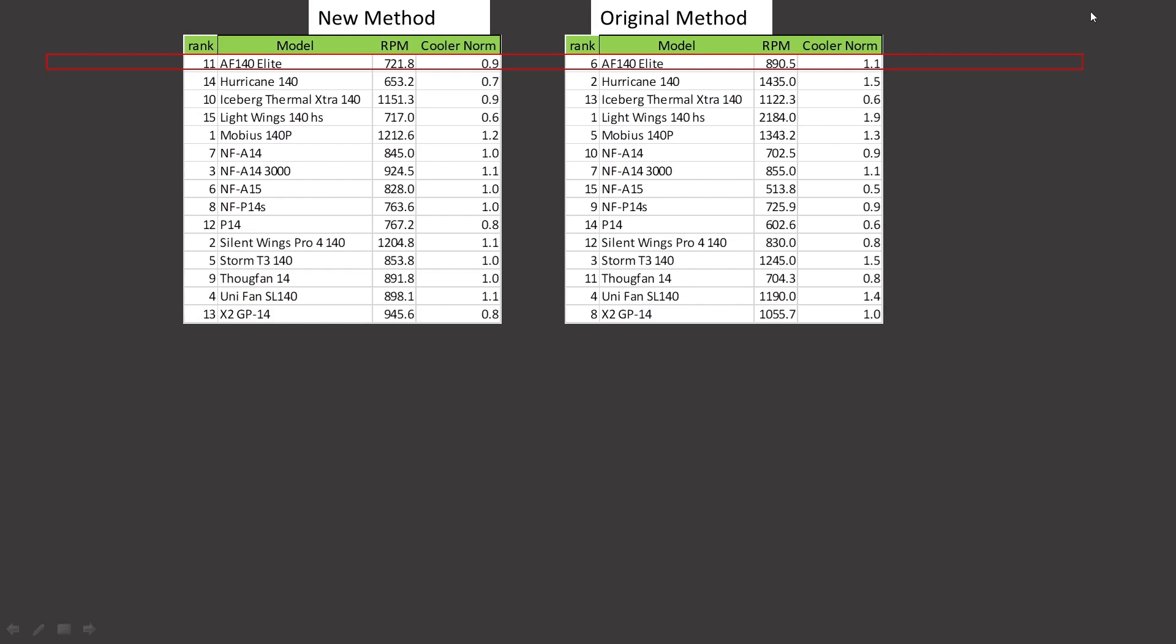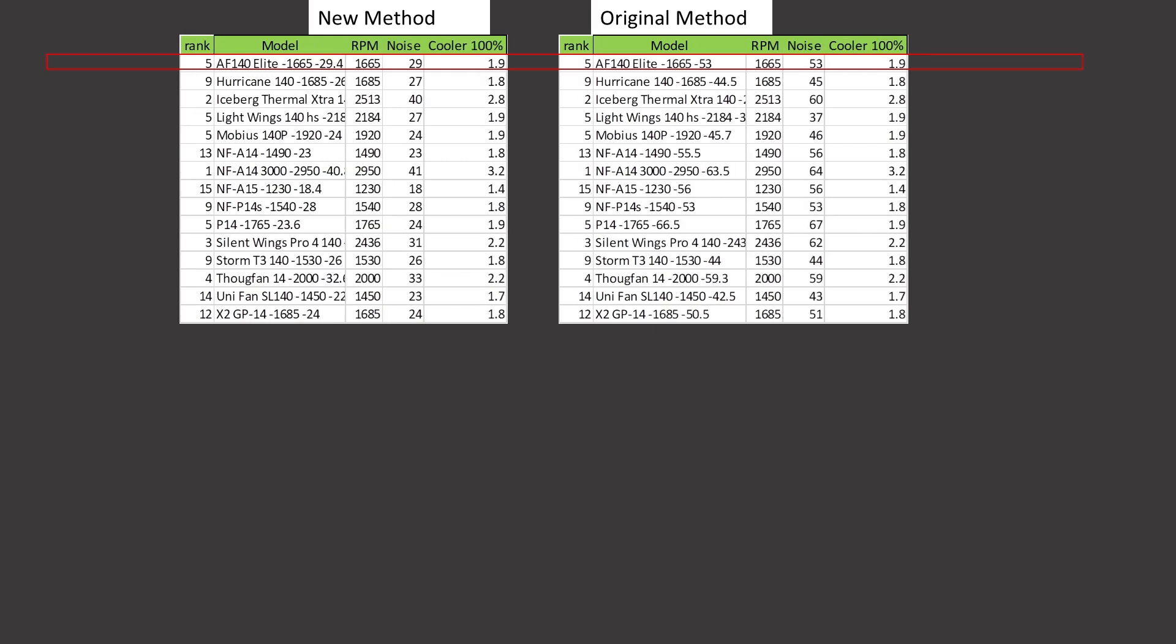Let's get into what we're actually taking a look here. So in the original testing methodology, the AF140 Elite is right here ranked number 6, moving 1.1 meters per second of air. It is now ranked 11th. So it's actually lost position relative to other fans value. At 100% PWM fan signaling, it's going to remain the same because noise isn't the main factor here. It's just whatever the maximum RPM the fan can run at.